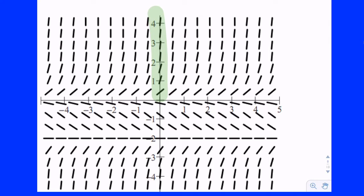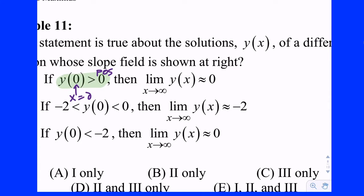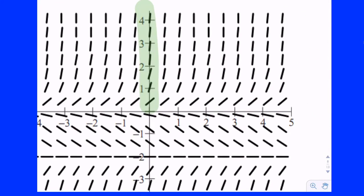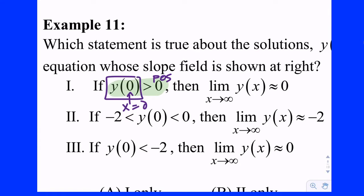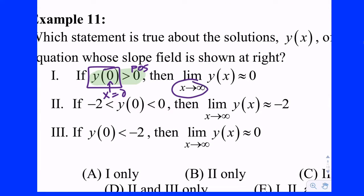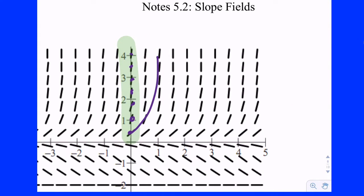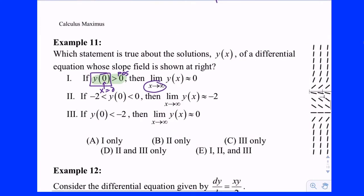No — if you drop in and go out to the right, they all appear to be going to infinity, going up. So statement 1 is false. It can't be A and it can't be E.